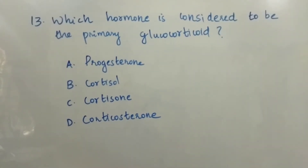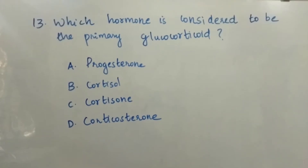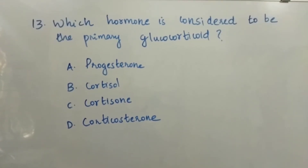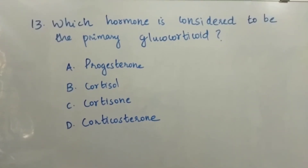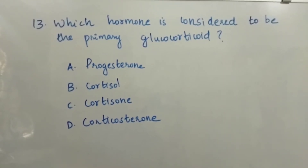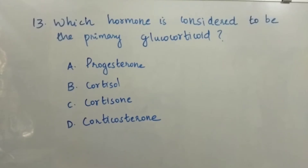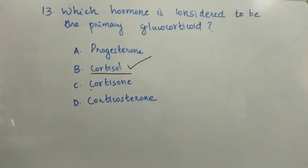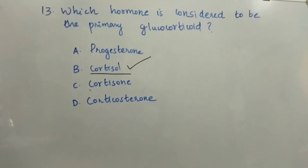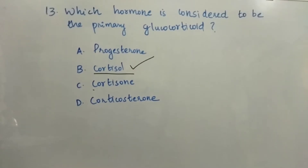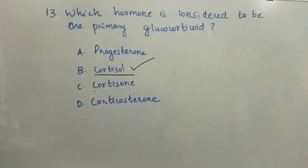Question number 13: Which hormone is considered to be the primary glucocorticoid? Option A: Progesterone. Option B: Cortisol. Option C: Cortisone. Option D: Corticosterone. The right answer is Option B, Cortisol. Cortisol is considered to be the primary glucocorticoid.